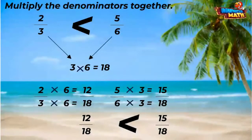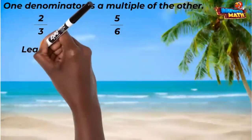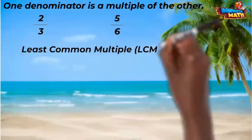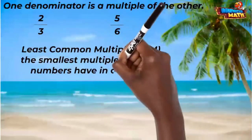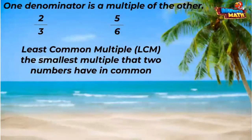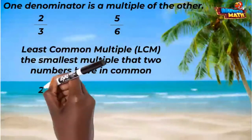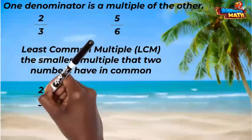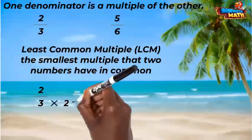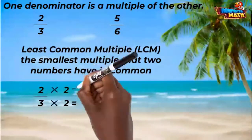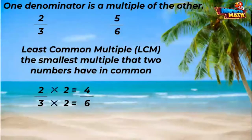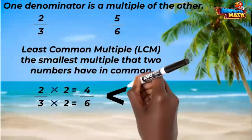Did you notice that the denominator six is a multiple of the other denominator three? We can make equivalent fractions with the least common multiple of the two denominators. So all we have to do here is find the equivalent fraction of two-thirds with the denominator of six. Three times two equals six, so let's multiply the numerator by two also. Two times two equals four. Now we can compare four-sixths to five-sixths, and we see that five-sixths is greater.